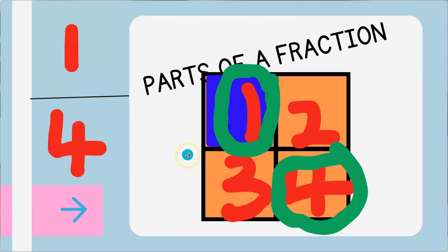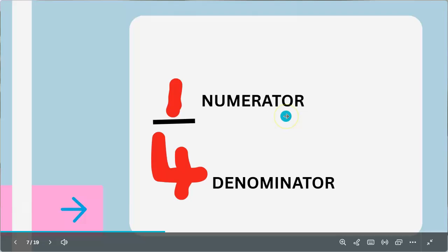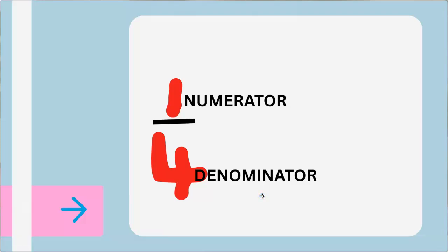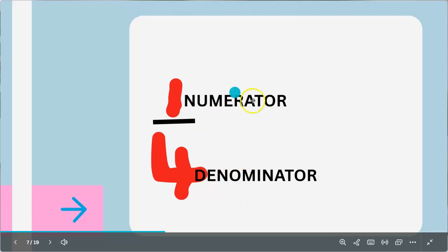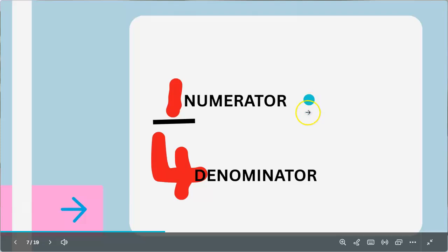The number at the top of the fraction is called the numerator, and the number at the bottom is called the denominator. In case you ever forget during an exam, just remember: D for down — D for denominator — which means the denominator is down and the numerator is up. Let's sing: denominator down down down, numerator up up up! Good job, you are doing amazing.